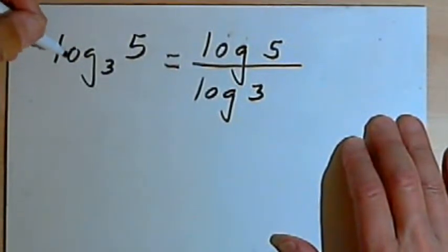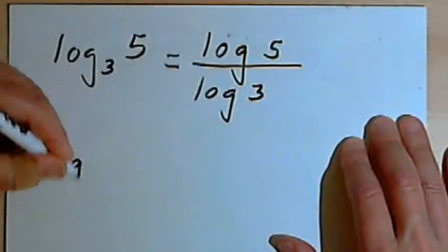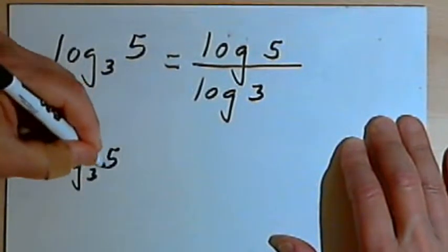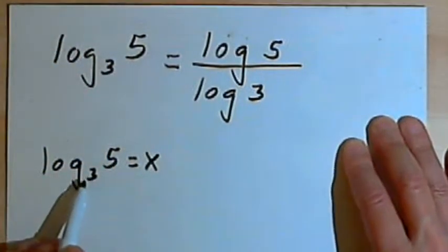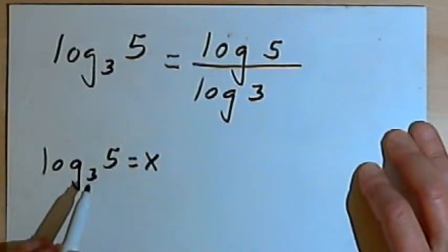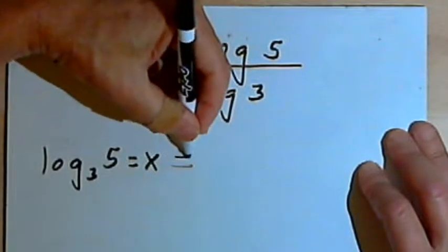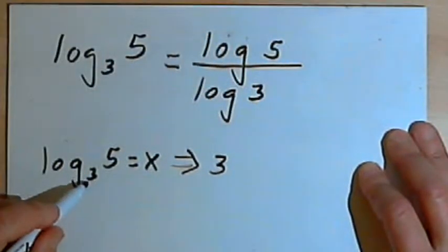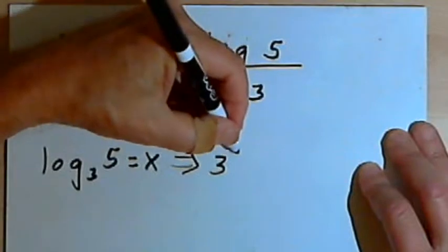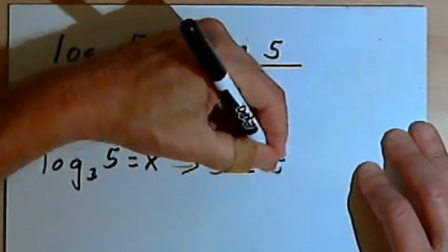So let me just explain why this works. If we take that original logarithm, the log base 3 of 5, and we say it equals x, then we can take this logarithm and we can convert it into its exponential form. We can convert that into 3, the original base, raised to the x power equals 5.